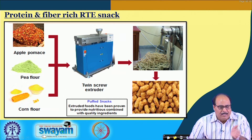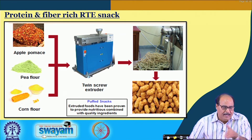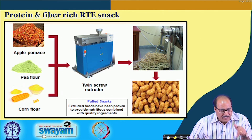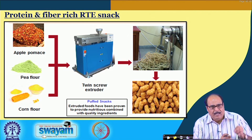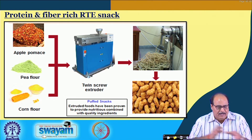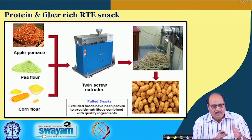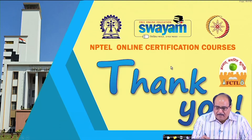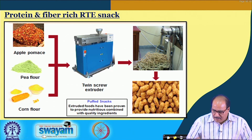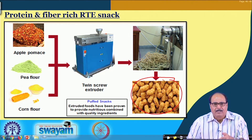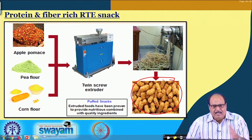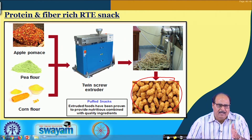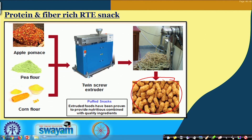Another product is a protein and fibre-rich ready-to-eat snack food. Pea protein is mixed with corn flour in appropriate amounts along with some apple pomace — which is a fibre-rich material. These are mixed in the appropriate amounts and fed to the extruder under desired conditions to get ready-to-eat expanded snacks of desired characteristics. The details of some of these products — particularly fortified rice kernels, Nutri-Dal and fortified noodles — will be taken up separately in a little more detail.